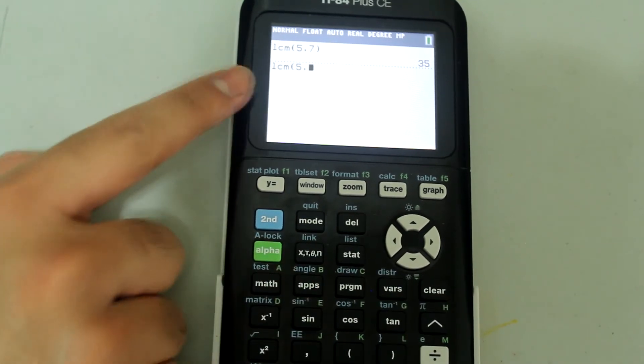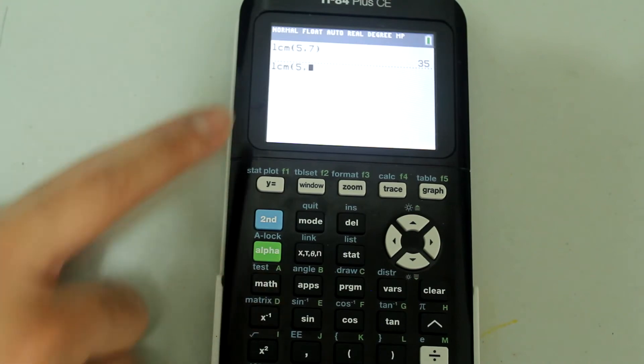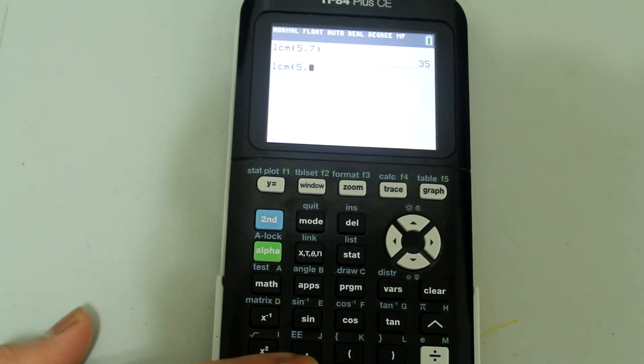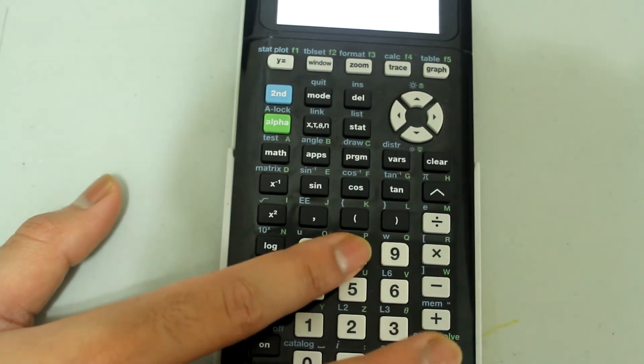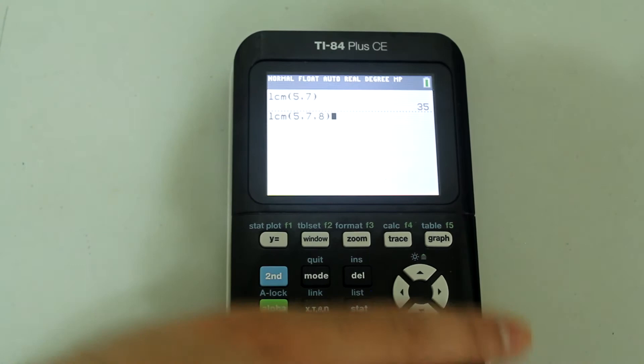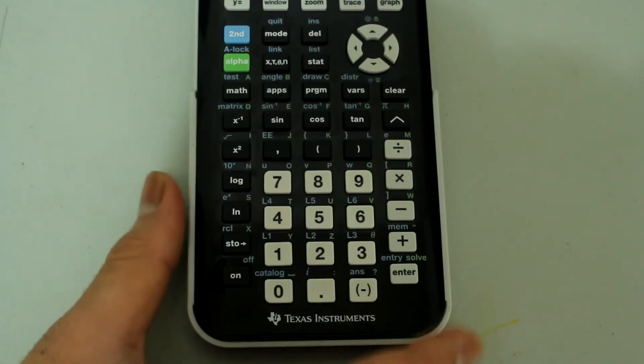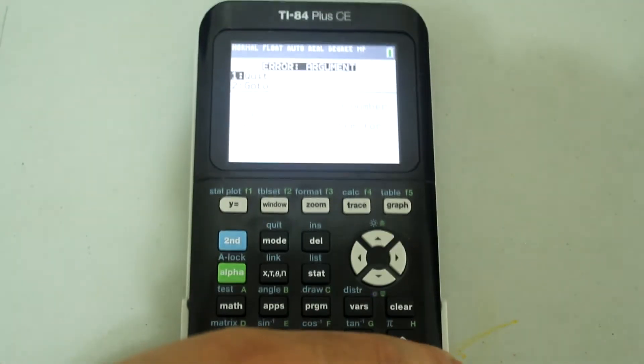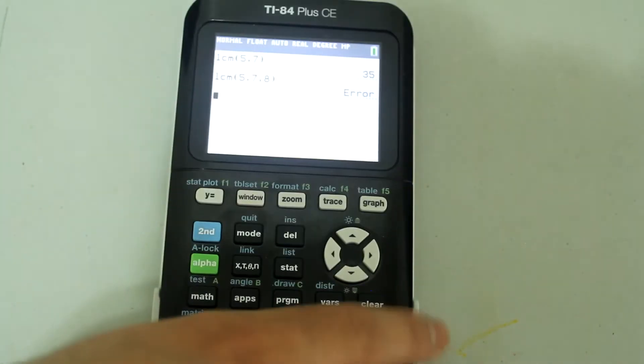So far I have LCM, the open parenthesis, 5 and then the comma, 7, another comma and 8 and then close the parenthesis. So it looks like this. If I try doing this on the calculator by pressing enter, I get an error message. Just press enter to exit the error message.